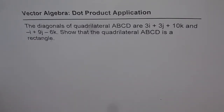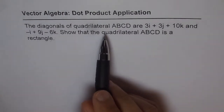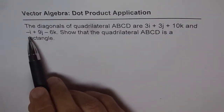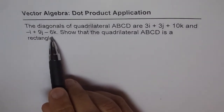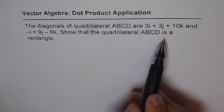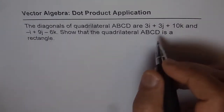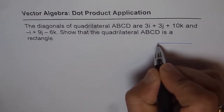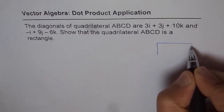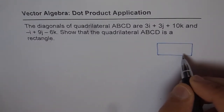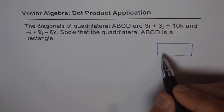Vector algebra dot product application — this is a very interesting example. The diagonals of a quadrilateral ABCD are 3i + 3j + 10k and -i + 9j - 6k. We need to show that the quadrilateral ABCD is a rectangle. Let's try to visualize it first — I'm making a rectangle, but it could be any quadrilateral in general, and we need to prove that it is a rectangle.